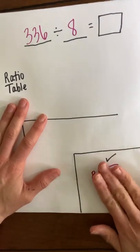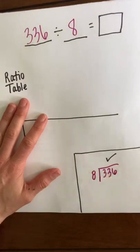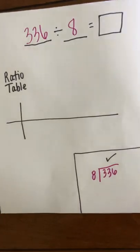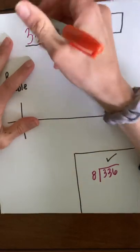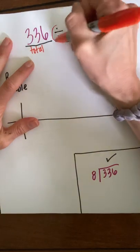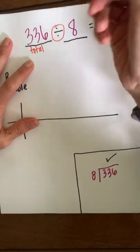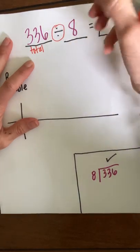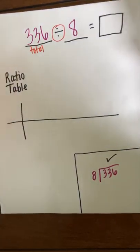So for this problem, reviewing it, we have the dividend, so we said that the dividend is kind of like the total and it's being split or divided or shared equally into eight groups. So the divisor tells us it's into eights.